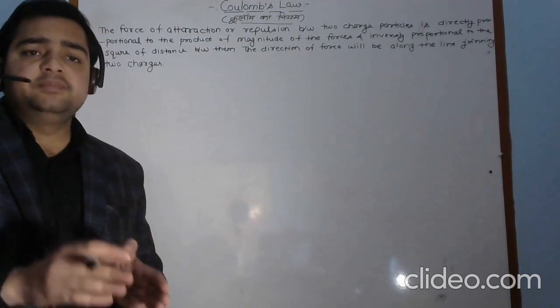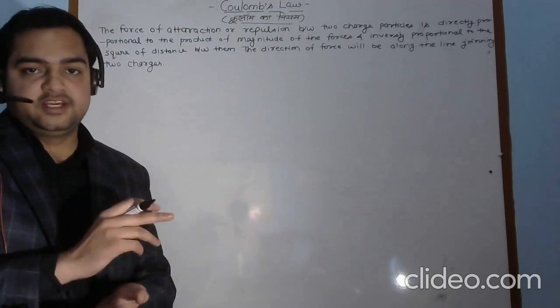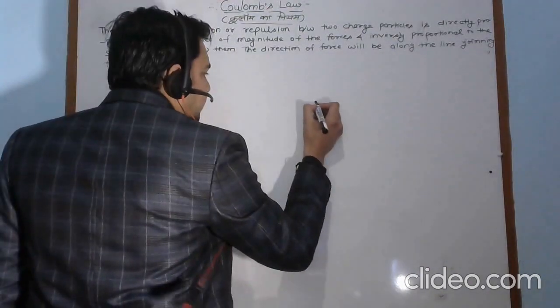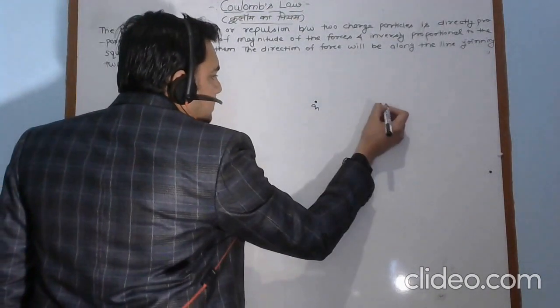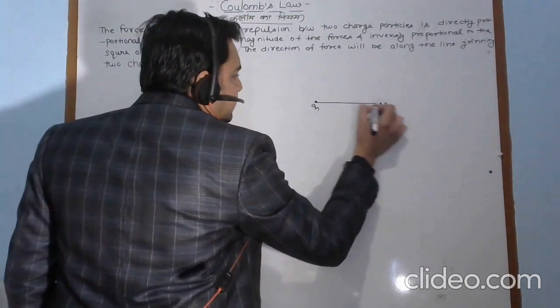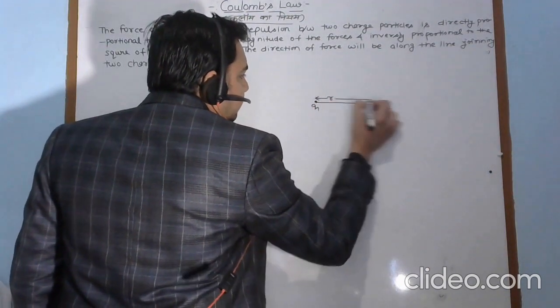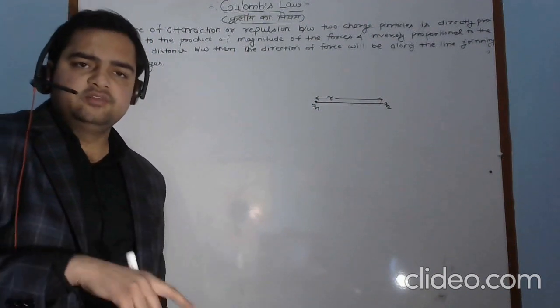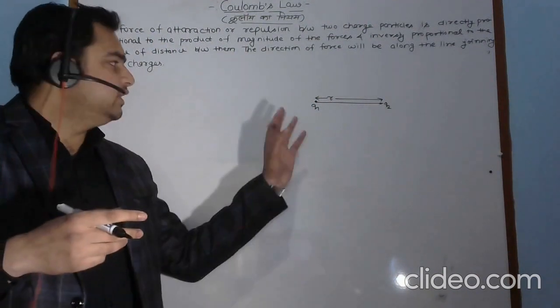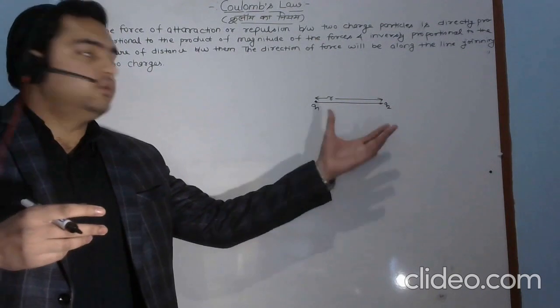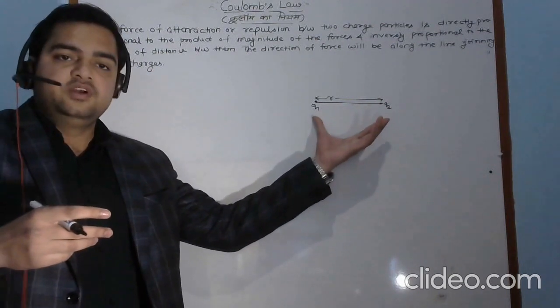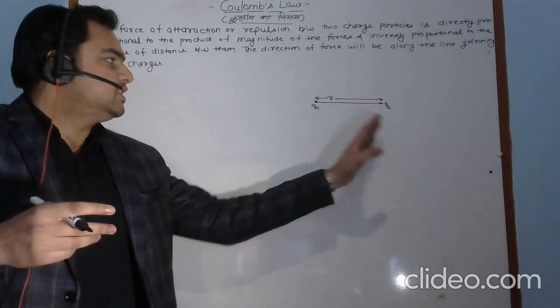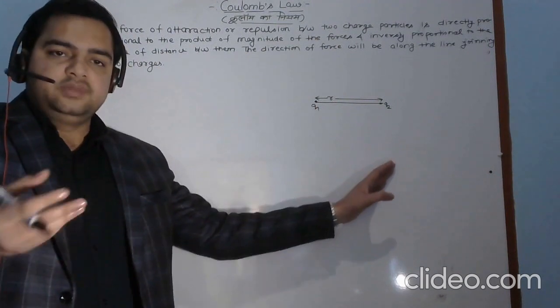Here we will determine the magnitude and direction of the force with the help of Coulomb's law. Suppose we have two charge particles, one is q1 and second one is q2, and the distance between them is r. We have to calculate the magnitude of the force acting between them. This force may be attractive or repulsive. That depends upon the nature of these two charges. If both charges are positive or negatively charged, then the force will be repulsive. If the charges are of opposite sign, then the force will be attractive.